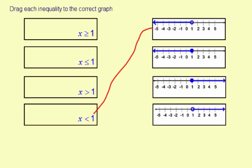The next graph, it's the same idea, except you have a closed circle which includes 1. So it means 1, and then all the numbers less than 1. So x is less than or equal to 1, which is this guy.